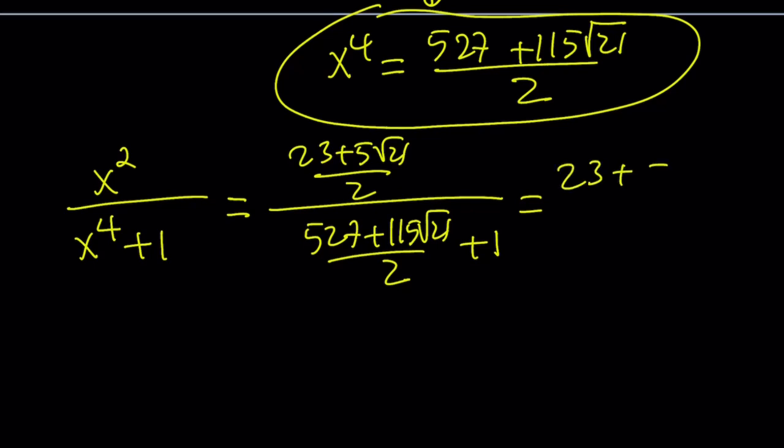So I can go ahead and write it like this. And the bottom one is going to give me, after making a common denominator, multiply 2 by 1, add 2 to 527, you're going to get 529 plus the radical is going to stay the same. Okay,